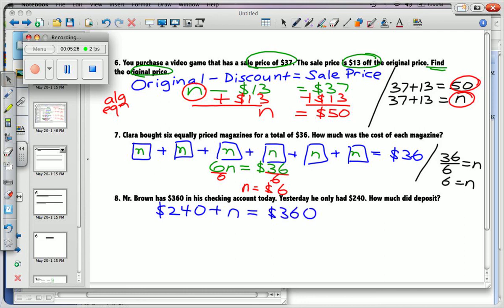When you have an algebraic equation like this, feel free to rewrite it so that the variable is first. Now, you can only do this with addition and multiplication problems. When it comes to subtraction and division, order truly matters. You can't flip-flop on subtraction. I'm doing that right now.